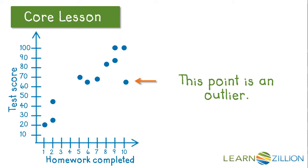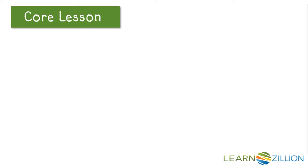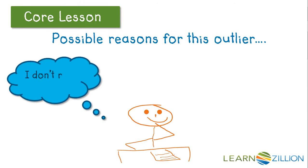This outlier shows us that a student completed all 10 of the assignments. However, they only made a 60 on their test. Let's think of some possible reasons for this. The student could have completed all 10 homework assignments, but not really understood what they were doing, therefore never mastering the material and still making a low test grade.